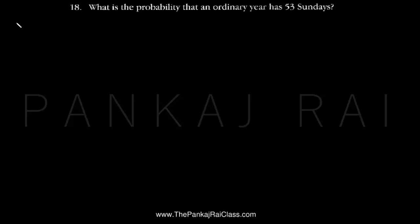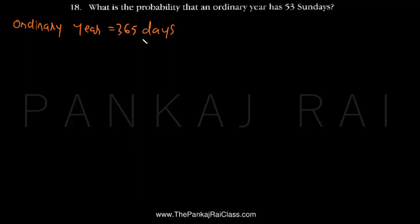So let us see — what is an ordinary year? An ordinary year is a year which has 365 days, because in that year February has 28 days. So in all there are 365 days, and that year is called an ordinary year. We know that seven days makes one week.